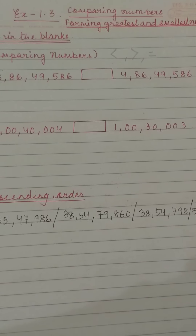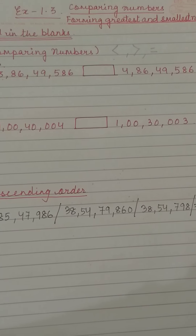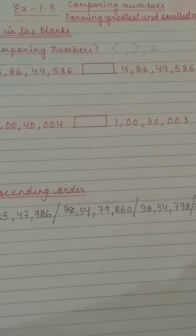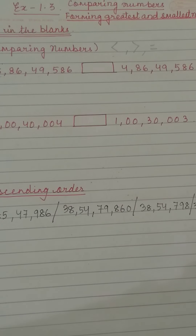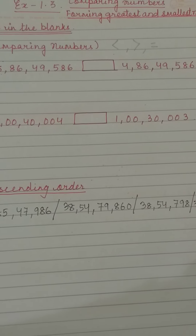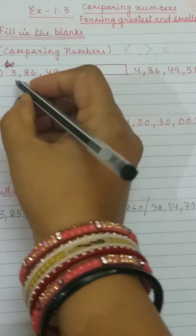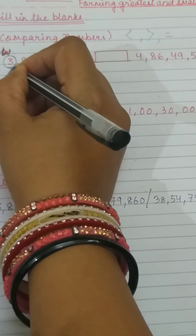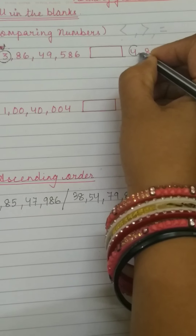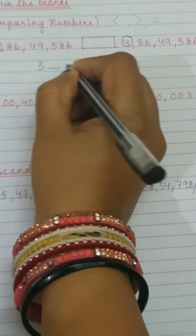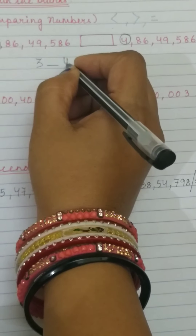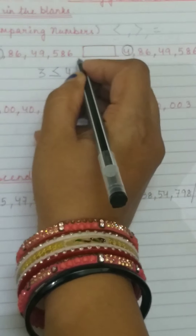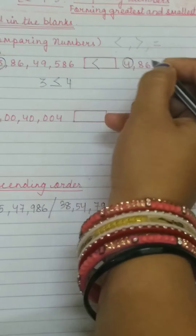The first question: 3 crore 86 lakh 49,586 has to be compared with 4 crore 86 lakh 49,586. We shall start comparing from the left side. We compare 3 and 4. So 3 is less than 4, meaning the total first number is less than the second number.